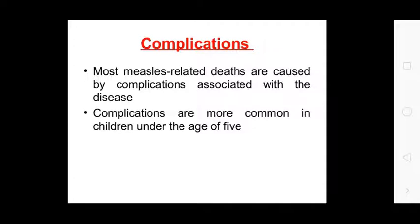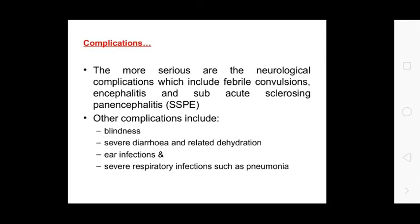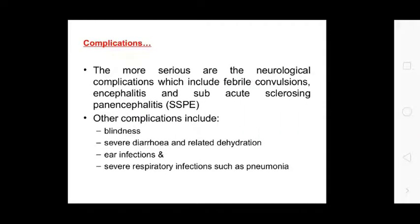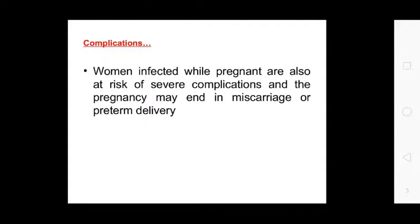Complications: most measles-related deaths are caused by complications associated with the disease. Complications are more common in children under the age of five. The more serious neurological complications include febrile convulsions, encephalitis, and subacute sclerosing panencephalitis. Other complications include blindness, severe diarrhea and related dehydration, ear infections, and severe respiratory infections such as pneumonia. Women infected while pregnant are also at risk; severe complications in pregnancy may lead to miscarriage or preterm delivery.